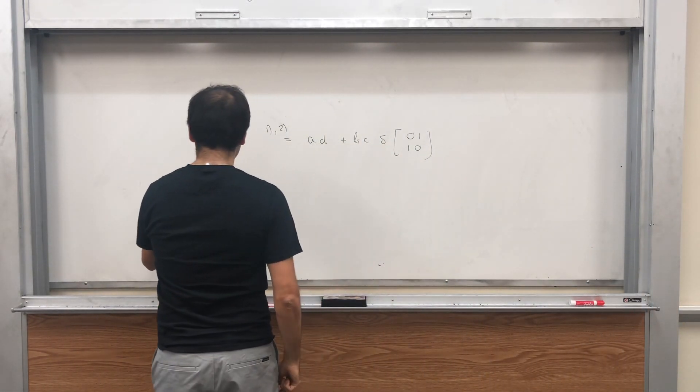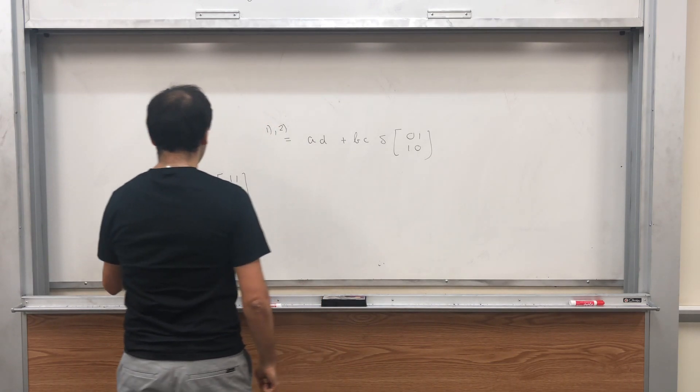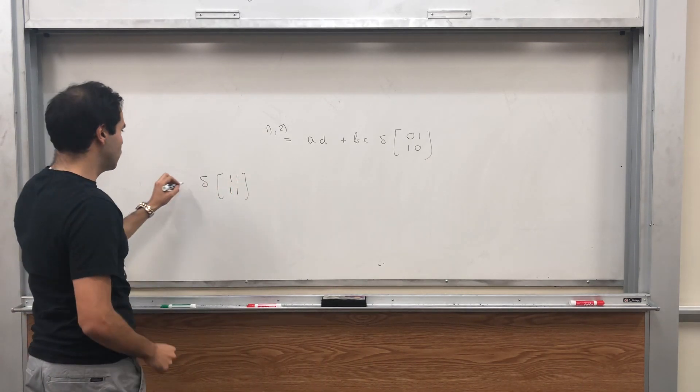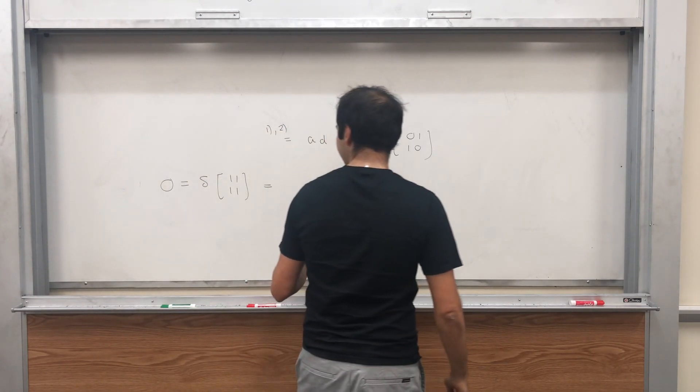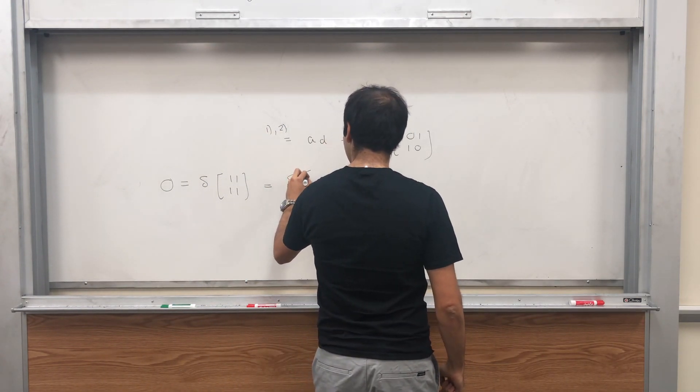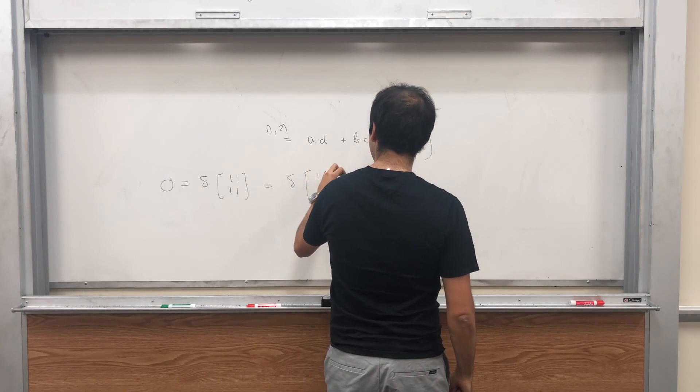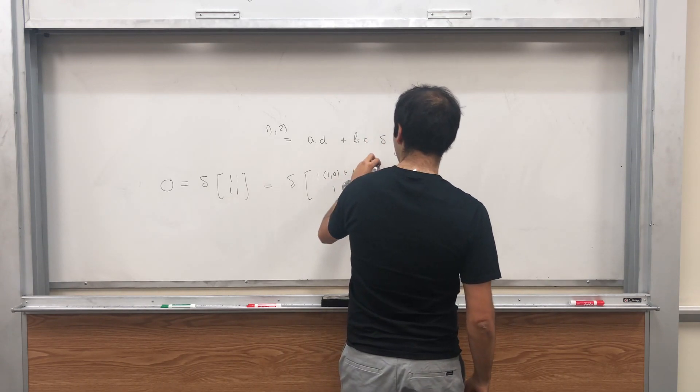But how do we evaluate that? There's actually a neat trick. Consider the following, delta of 1, 1, 1, 1. Those are two identical rows, so this is 0. On the other hand, this is delta of 1 times 1, 0 plus 1 times 0, 1, and then 1, 1.